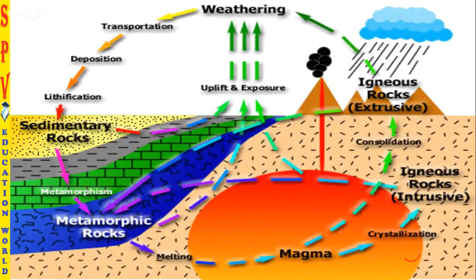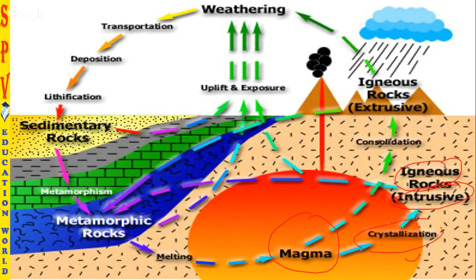Everything starts from the magma stage. Magma is the molten form of rocks found underneath the earth, mostly below the lithosphere. As it rises inside the earth, consolidation occurs and it solidifies to form igneous rocks — this is called intrusive, meaning crystallization of magma inside the earth. If it comes to the surface as lava, it cools down to form igneous rocks called extrusive rocks. So magma solidifies into igneous rocks: intrusive means inside the earth, extrusive means outside.